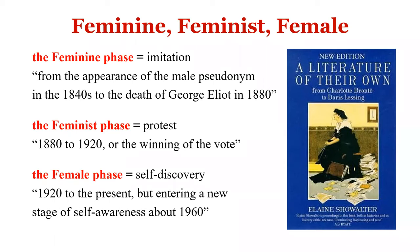The Feminine phase runs from the appearance of male pseudonyms in the 1840s to the death of George Eliot in 1880. After that came the Feminist phase — 1880 to 1920 — centered on protest: women demanding the right to vote, rights to education, and other basic rights. The third is the Female phase — from 1920 to the present, with a new stage of self-awareness entering around 1960. In this phase, women discover their own language, discuss their bodies, feelings, and subjective experience.